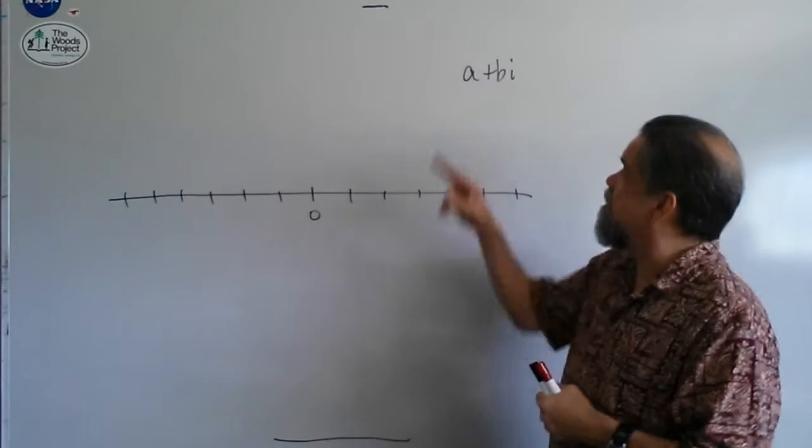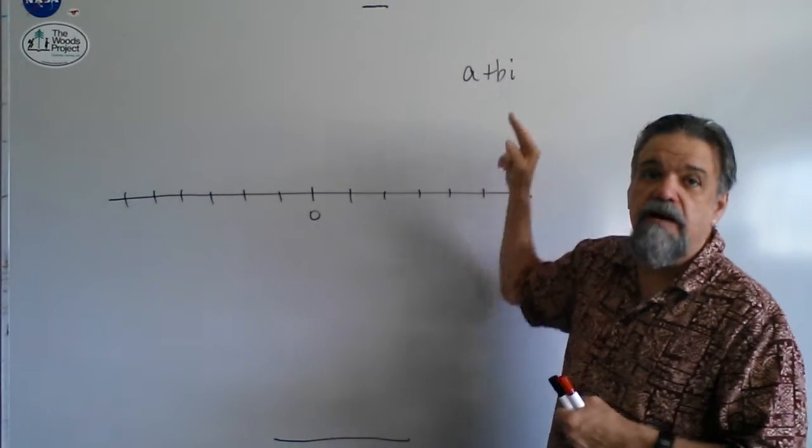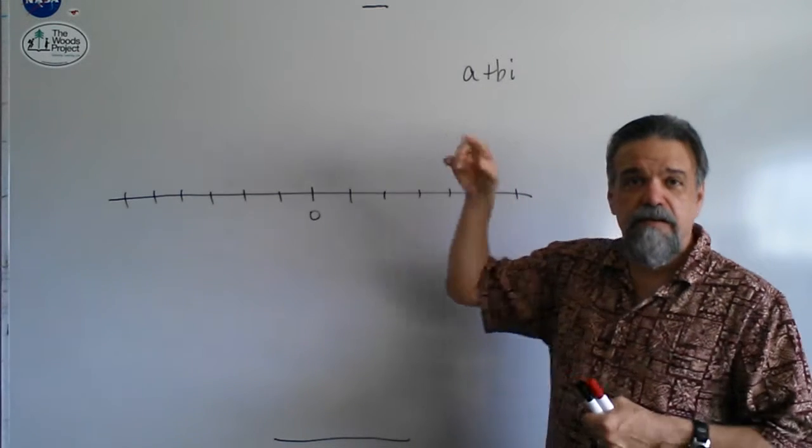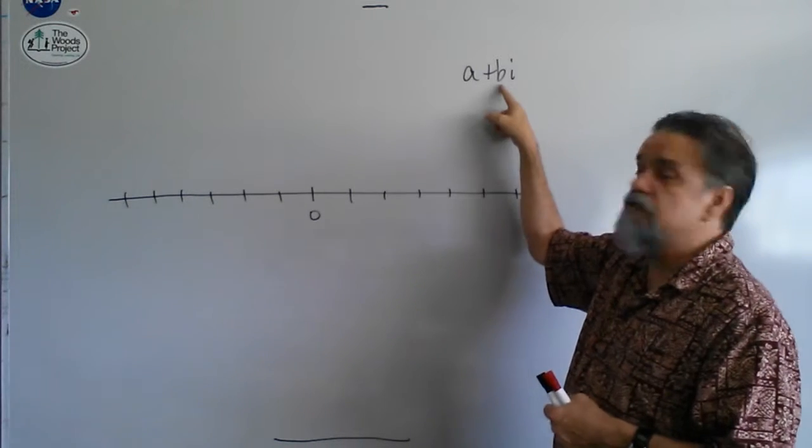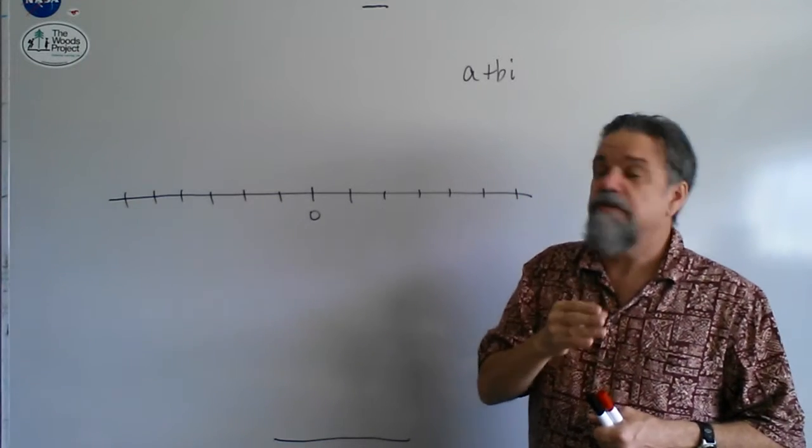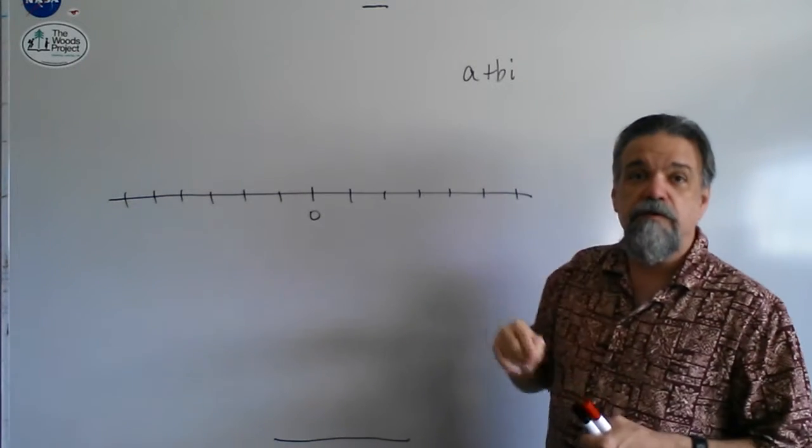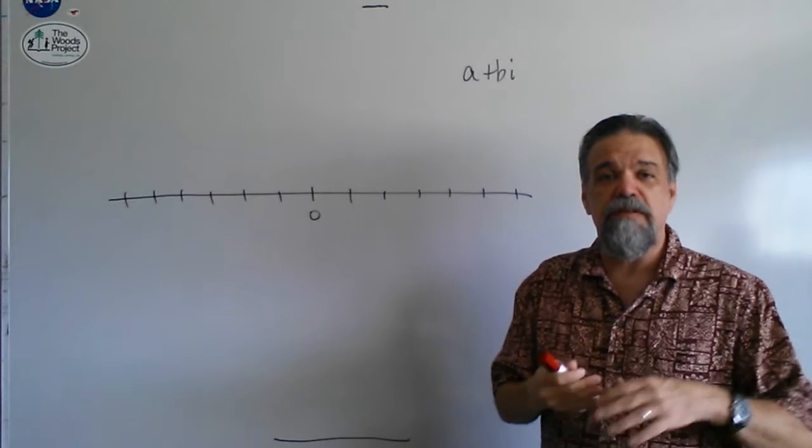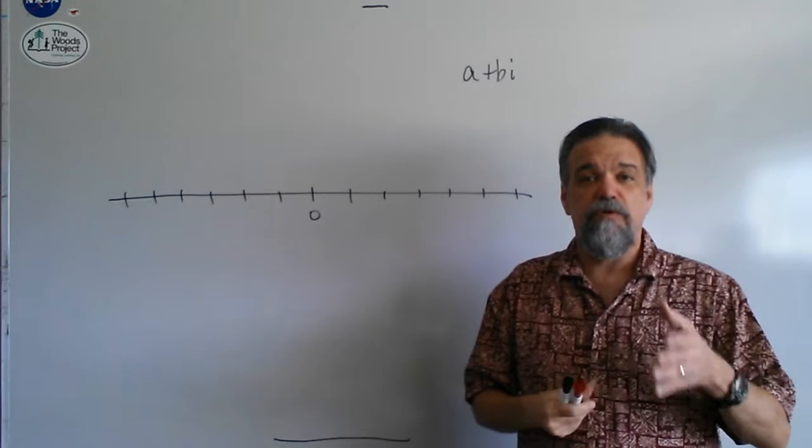A complex number can always be written A plus B times i, where A is a real number, B is a real number, and i is the imaginary unit. So B times i together is an imaginary number. And by the imaginary unit, I mean it's the square root of negative one.